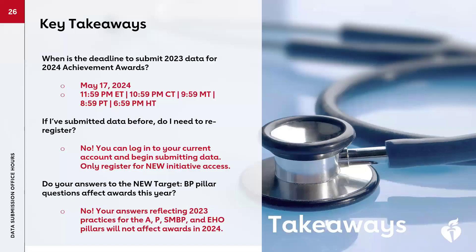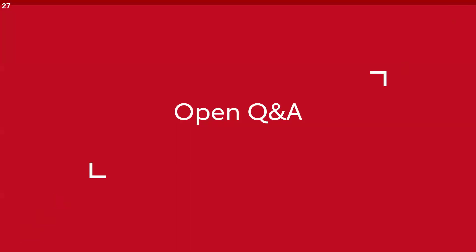Key takeaways: The deadline to submit data for an achievement award is May 17th. If you've submitted data before, you do not need to re-register unless you'd like to add a new initiative. As you submit answers to the new Target BP pillar questions, know that they won't affect your awards this year, but they will help establish a baseline for future recognition and awards.